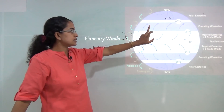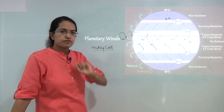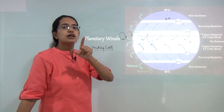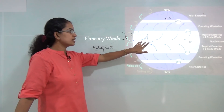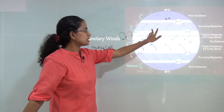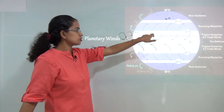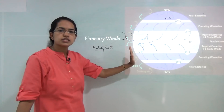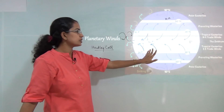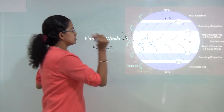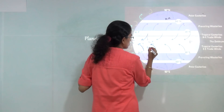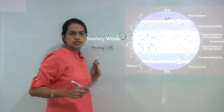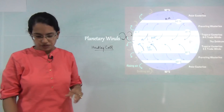All wind names originate based on the region of origination, not the destination. In the northern hemisphere, trade winds originate from the north and east, so they are called northeast trade winds. In the southern hemisphere, they originate from the south and east, so they are called southeast trade winds.